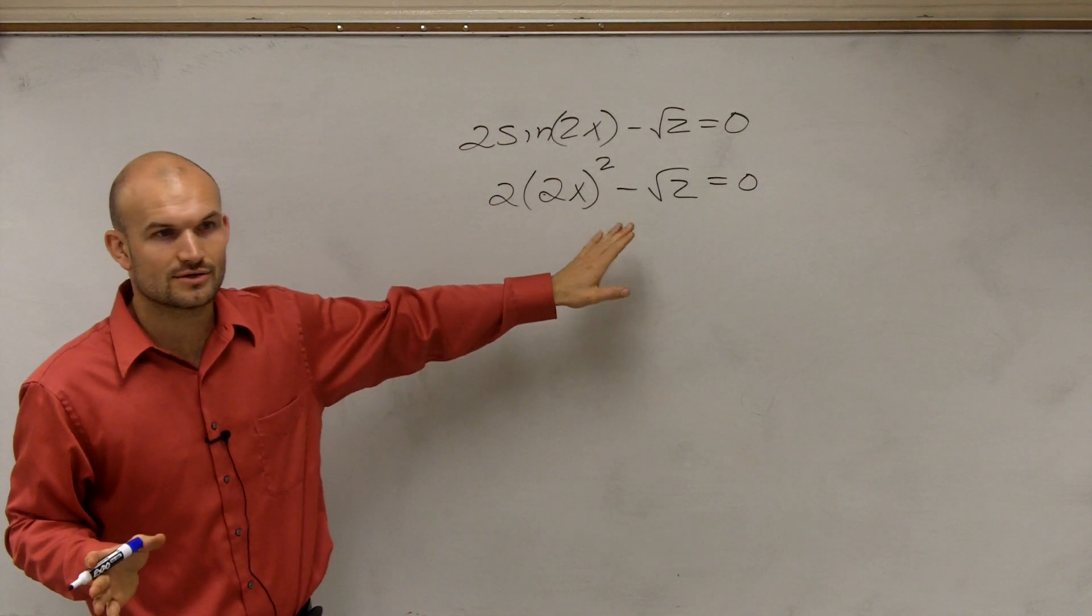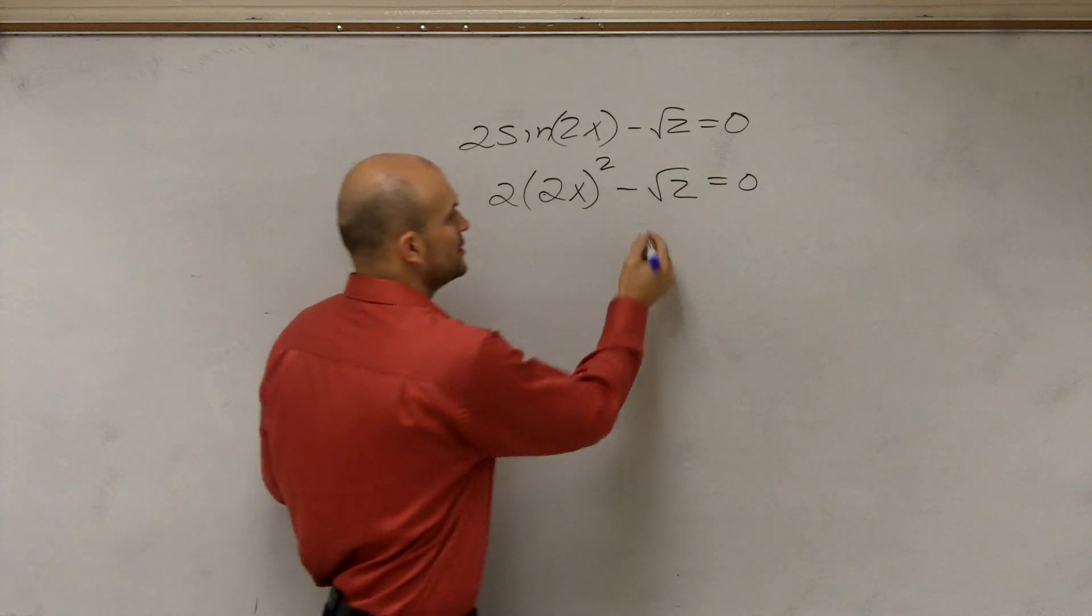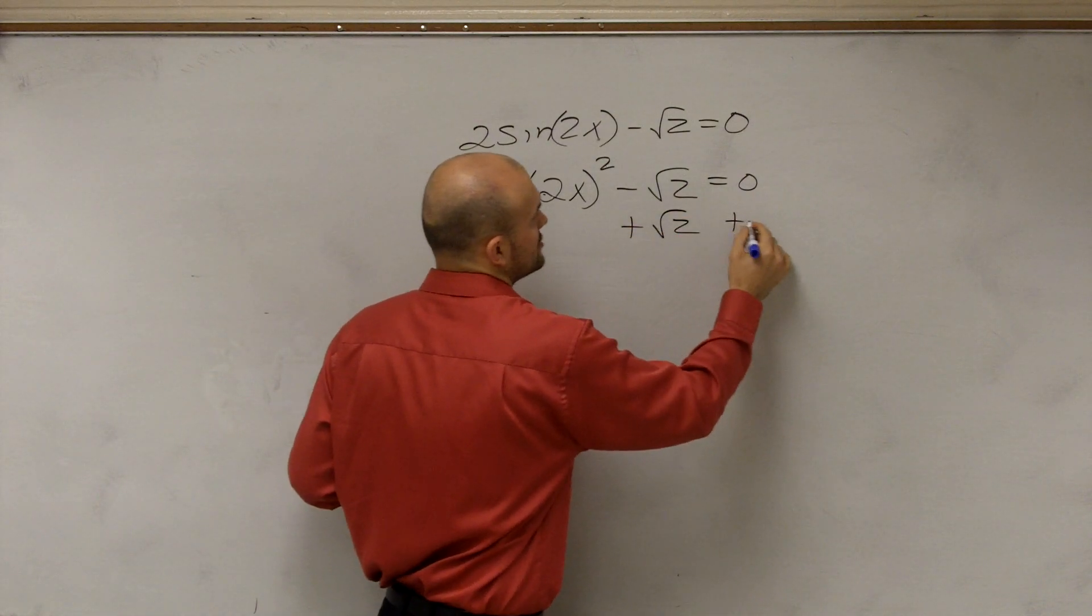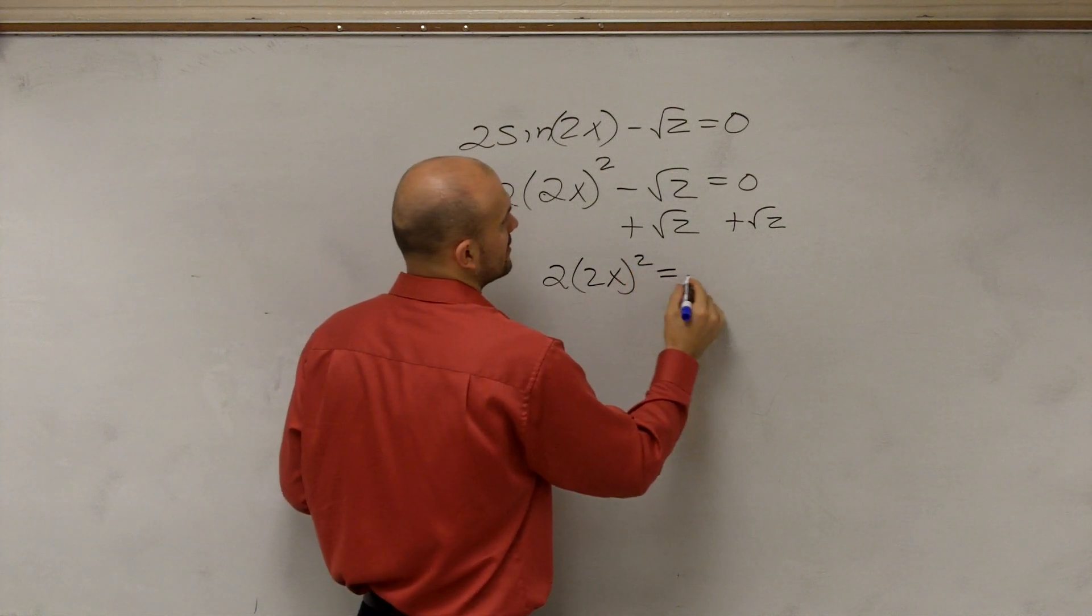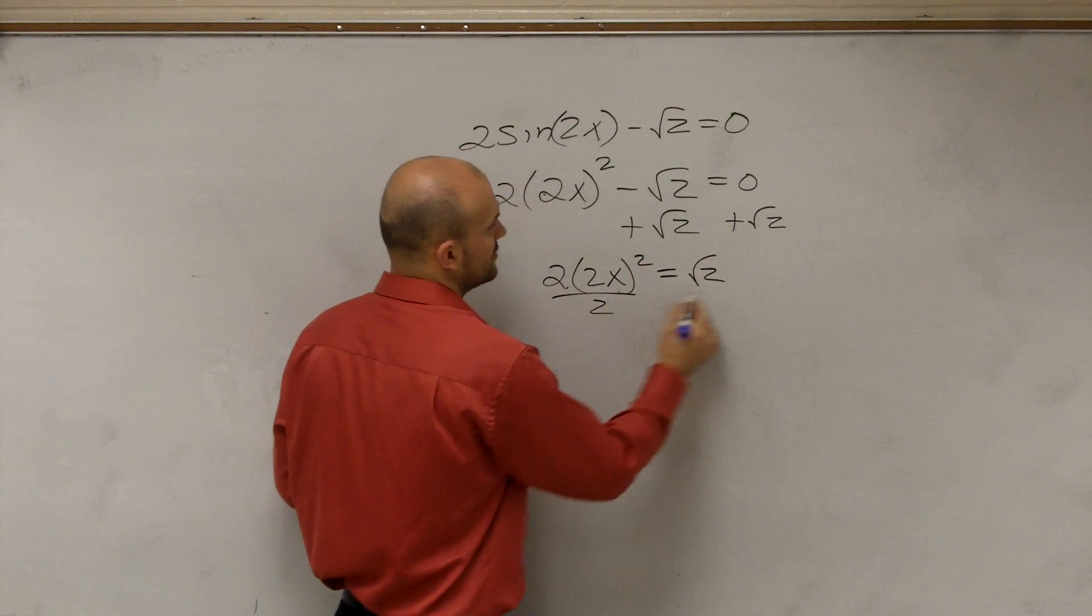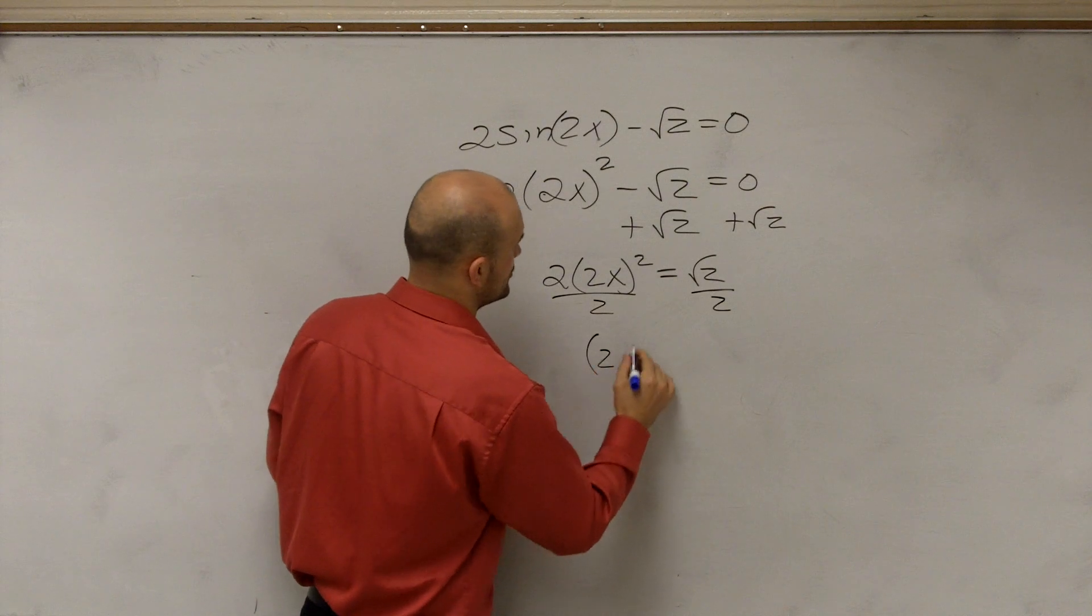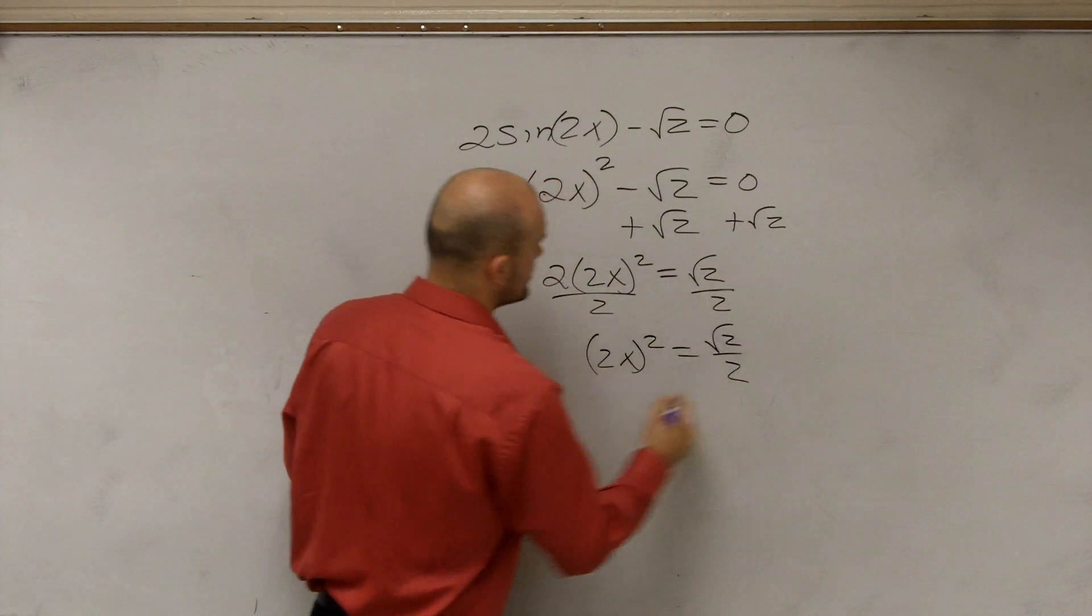It's quadratic, right? There's no sine or cosine. So let's say I said to solve. You're going to do the same thing, right? You're going to add the square root of 2. So if you have 2 times 2x squared equals the square root of 2, then you divide by 2. Now you have 2x squared equals the square root of 2 over 2.